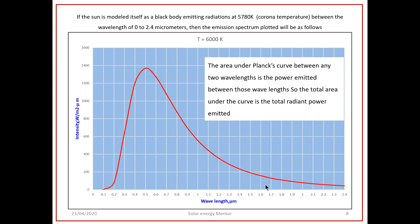We have obtained the Sun's temperature from the Stefan-Boltzmann equation. If we model the Sun as a black body at a corona temperature of 5780 Kelvin emitting radiation between wavelengths of 0 to 2.4 micrometers, then the emission spectrum plotted in Excel will show intensity (W/m²·μm) on the y-axis and wavelength in micrometers on the x-axis, starting from 0.1 micrometer to avoid division by zero.